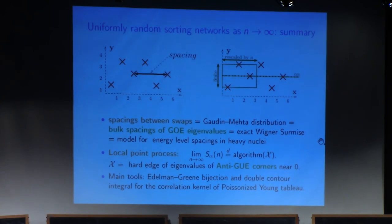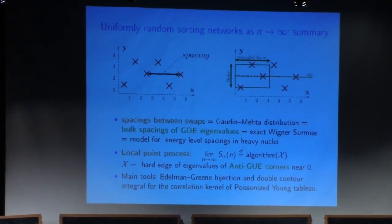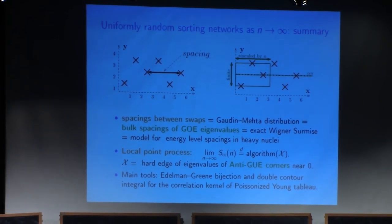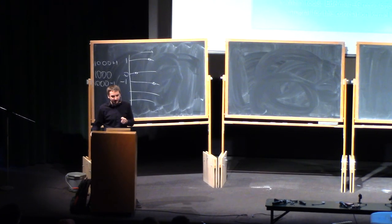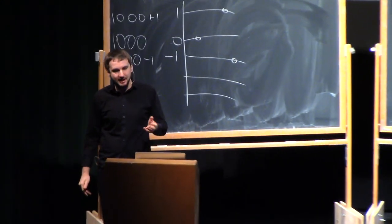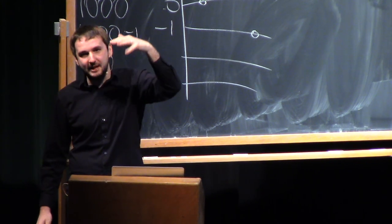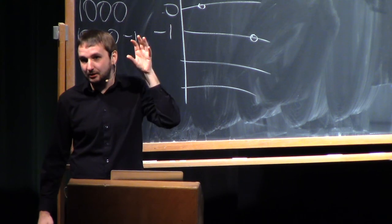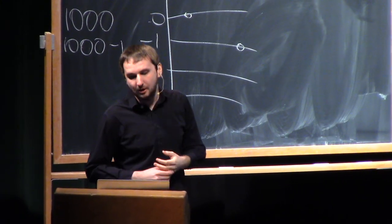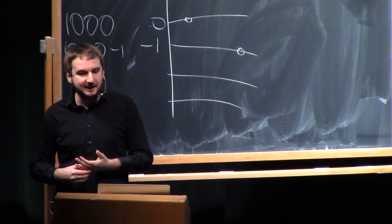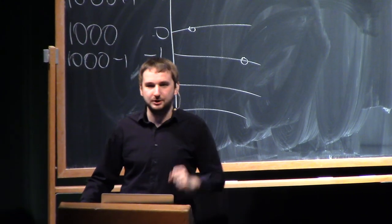So that's the summary. We are looking at uniformly random sorting networks of large rank, and we saw two kinds of limit results. First, if you look at the spacings between two swaps on the same level, after proper rescaling these spacings are governed by the universal distribution of random matrix theory — the Gaudin-Mehta distribution, which is the bulk spacing of eigenvalues of symmetric matrices, or as Wigner put it, a model for energy level spacings in heavy nuclei. More generally, the whole local picture can be identified via the Jeu de Taquin algorithm applied to the universal object from random matrix theory — the hard edge of eigenvalues of the anti-GUE corners process. The main tools are the Edelman-Green bijection with Young diagrams, Poissonization, and double contour integrals.